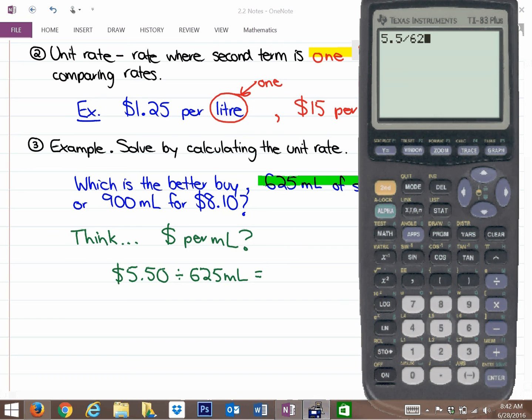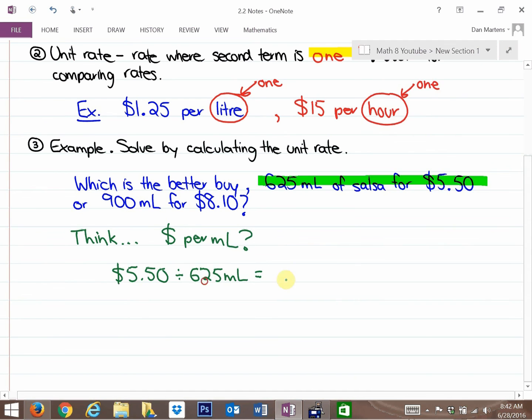You might want to practice this on your own on your calculator to make sure you're getting the same numbers, and that is 0.0088. So it's less than a penny, but this is a useful number, per milliliter.